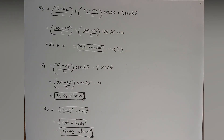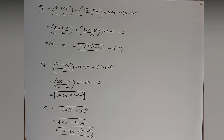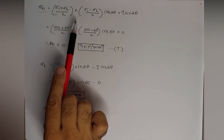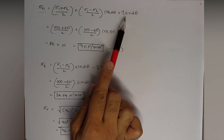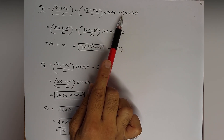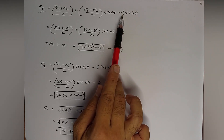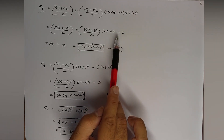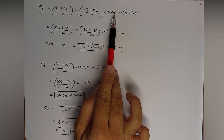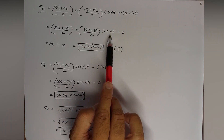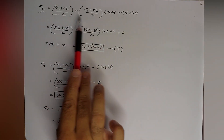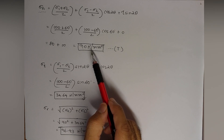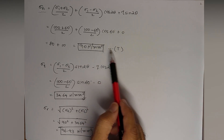The equation for normal stress σₙ is: (σ₁ + σ₂)/2 + (σ₁ − σ₂)/2 · cos 2θ + τ · sin 2θ. Since τ = 0, the last term vanishes. With θ = 30°, we get 2θ = 60°, so cos 60° applies. Substituting σ₁ = 100 and σ₂ = 60, solving gives σₙ = 90 N/mm² (tensile).